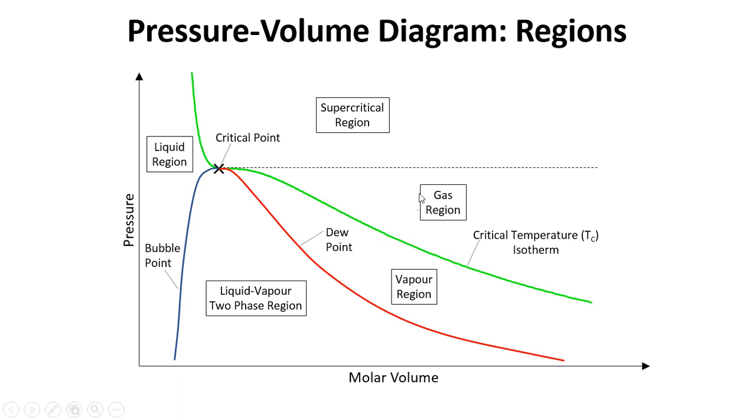We then have the gas region. So where we are above the critical temperature we have this gas phase and as long as we're below this critical pressure here. So this dashed line here represents the critical pressure. Once we go above this line we're in the supercritical region. This is the critical point and we also have a liquid region over to the left here as well.